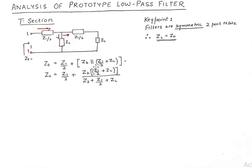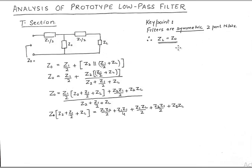In the next step, we use the formula for parallel impedances: branch 1 times branch 2 divided by branch 1 plus branch 2. Then we take the LCM, which becomes Z2 + Z1/2 + ZL, multiplied into the numerator. After that, we cross-multiply and the denominator moves to the left-hand side.